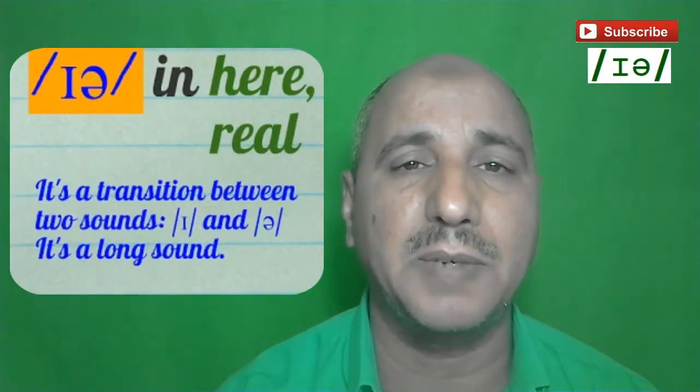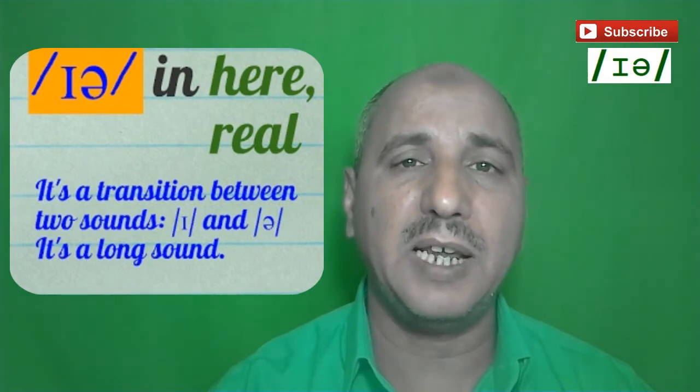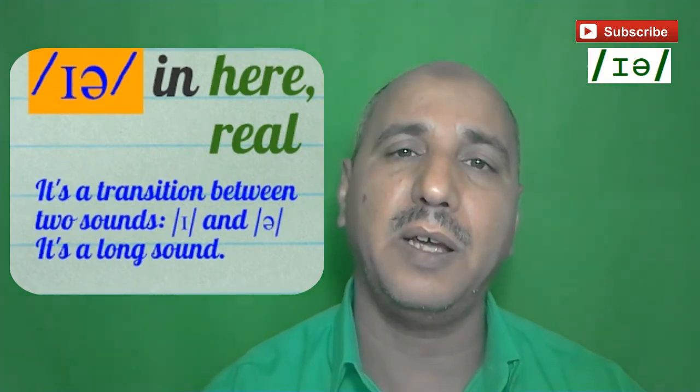The sound /ɪə/ is a double vowel sound consisting of two sounds, found in words like 'here' and 'rear'. What happens is a transition between the two sounds — from the /ɪ/ sound in the front, moving to the schwa sound in the center of the tongue. Now let's watch a video of a native speaker producing this sound correctly. Try to look carefully at the shape of the mouth and how the native speaker produces this sound: /ɪə/.